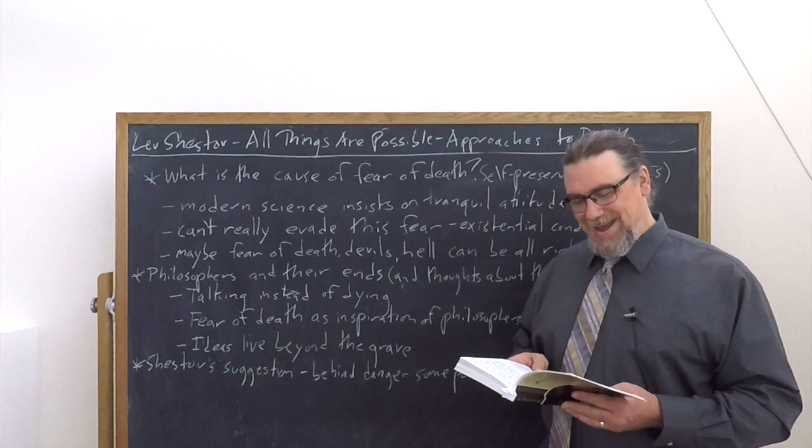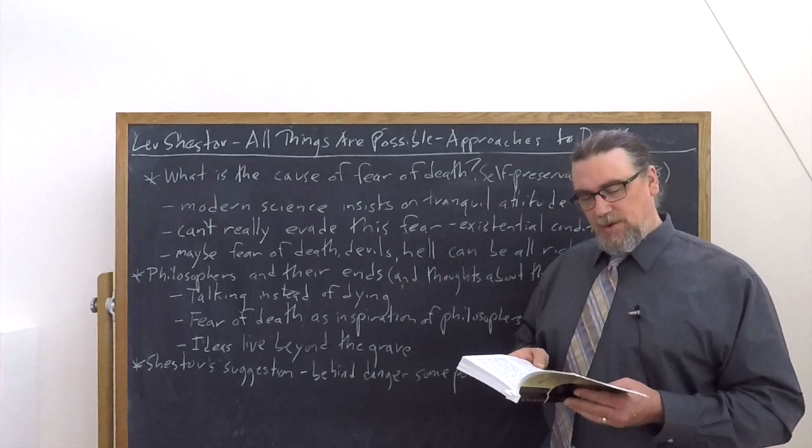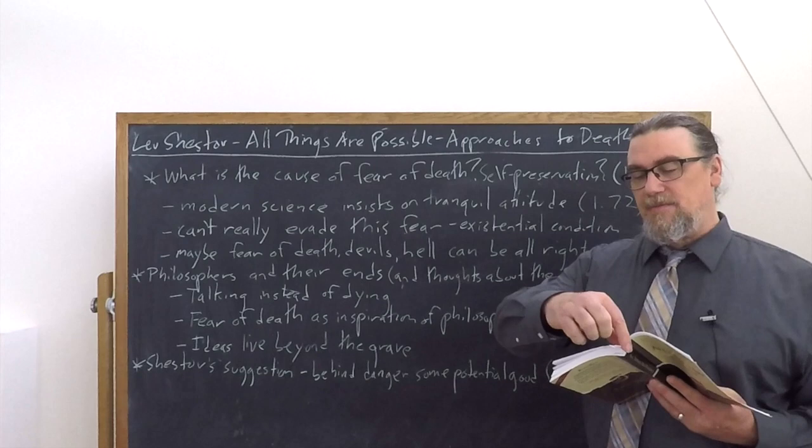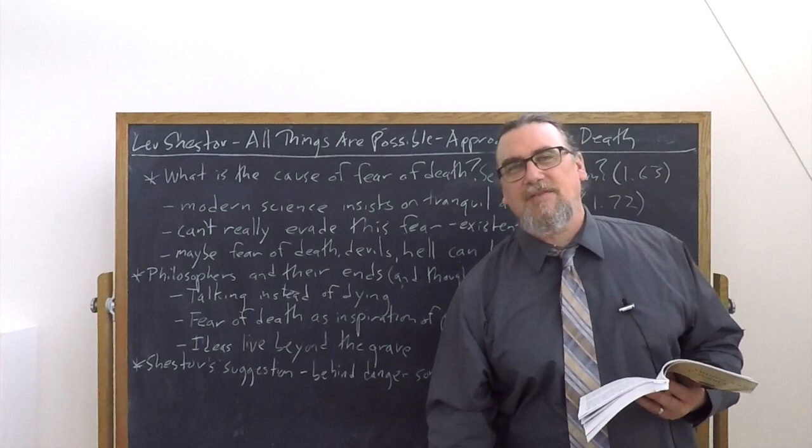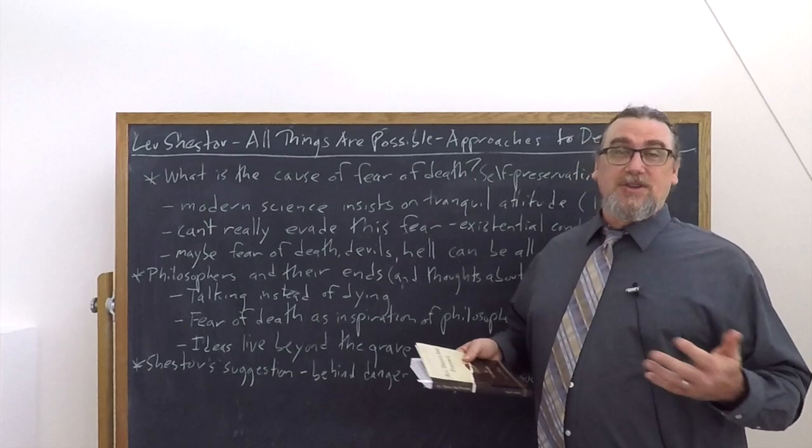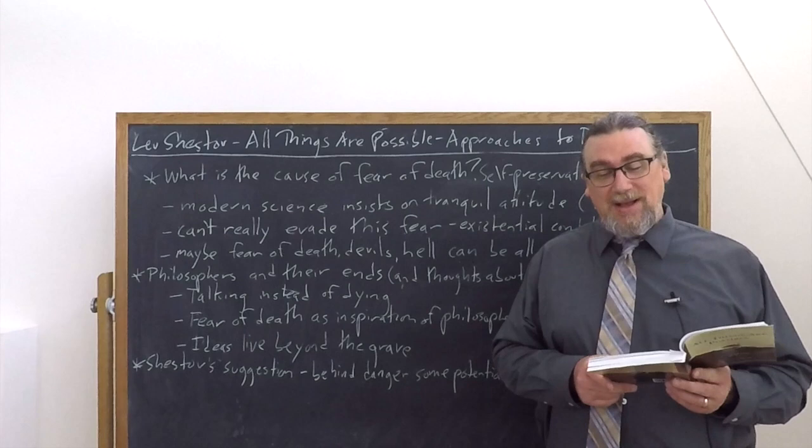He also talks about philosophers and whether they had good deaths and whether their ideas about death were particularly on point. And this is kind of interesting. This is chapter five. He talks about Plato's last conversations, Plato's account of the last conversations with Socrates, the days, the hours of the old man are numbered. And yet he talks, talks, talks. He talks about Crito and he talks about the Phaedo.